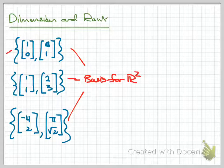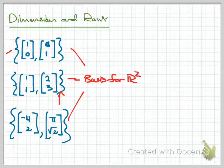Bases for R2 can look like many different things, but they can't be larger or smaller sets. If I took one of these bases and added a third vector, the set would no longer be linearly independent, because having three or more vectors in R2 makes the set automatically linearly dependent.